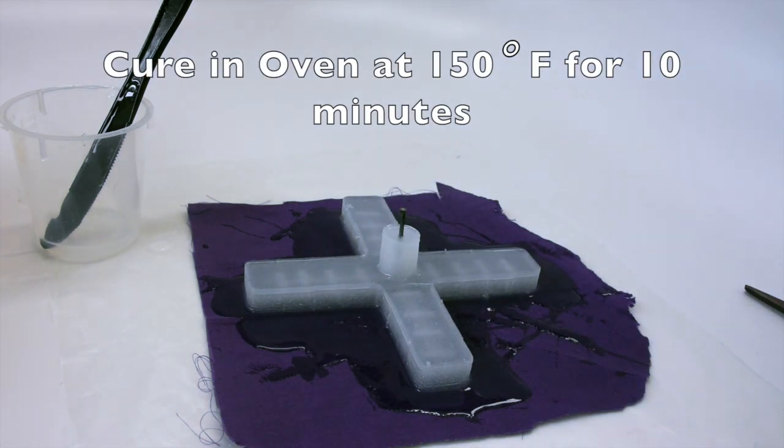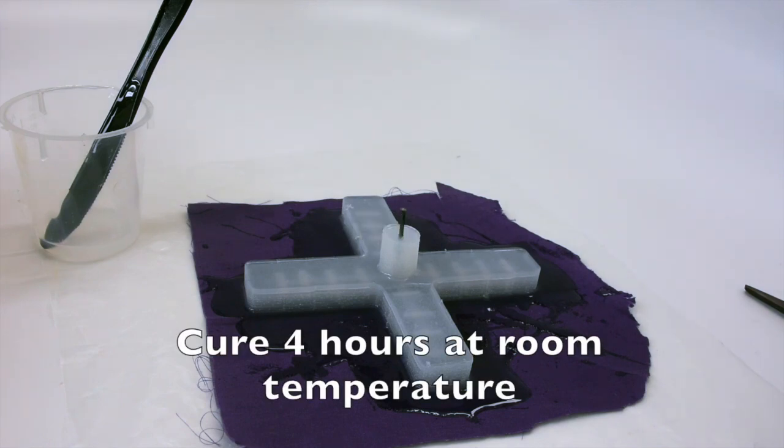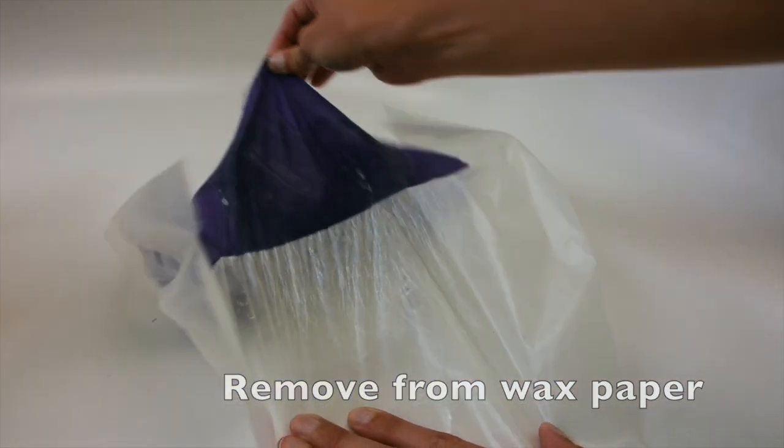It takes 10 minutes for the fabric to cure to the gripper in the oven or leave it out for 4 hours at room temperature. Remove the fabric and gripper from the wax paper once it's cured.